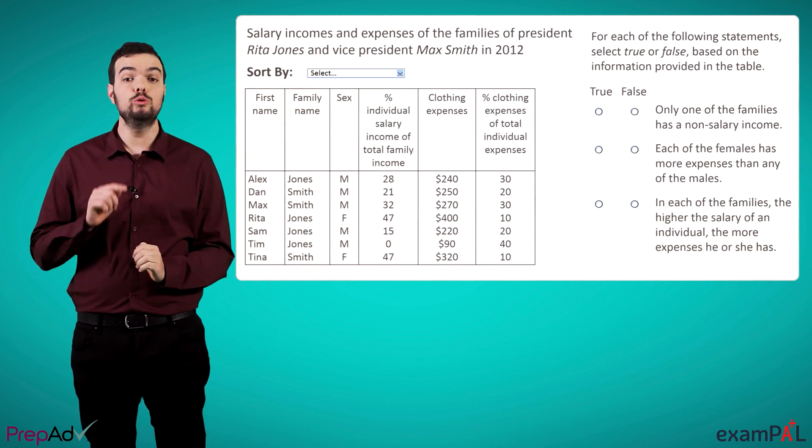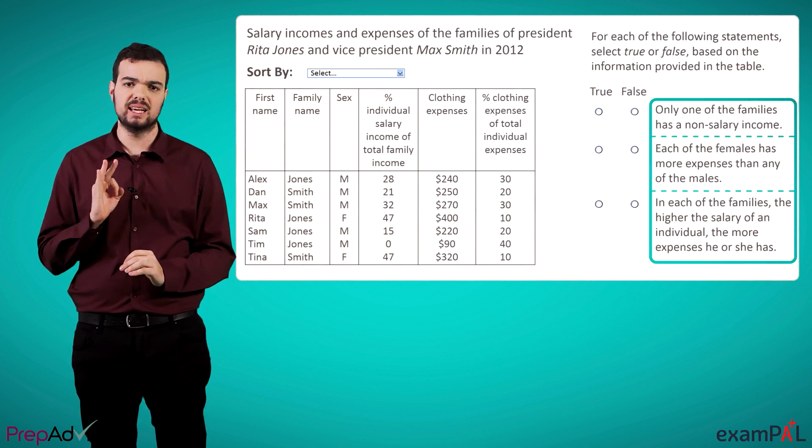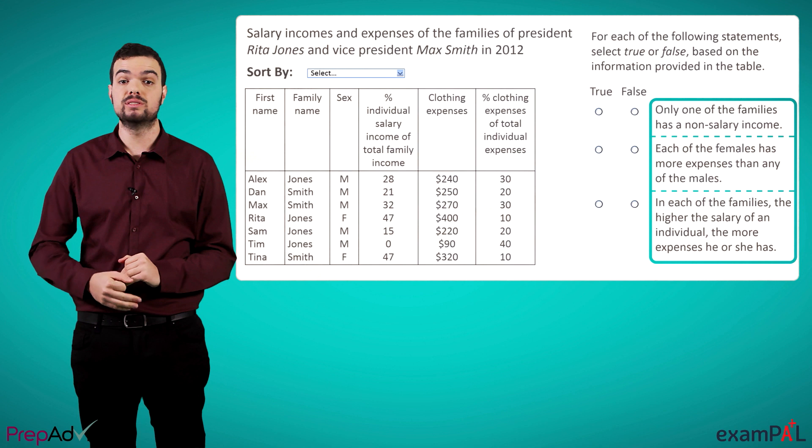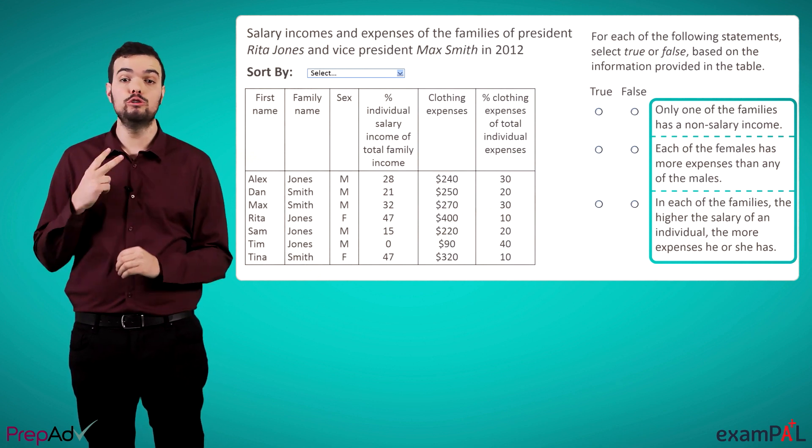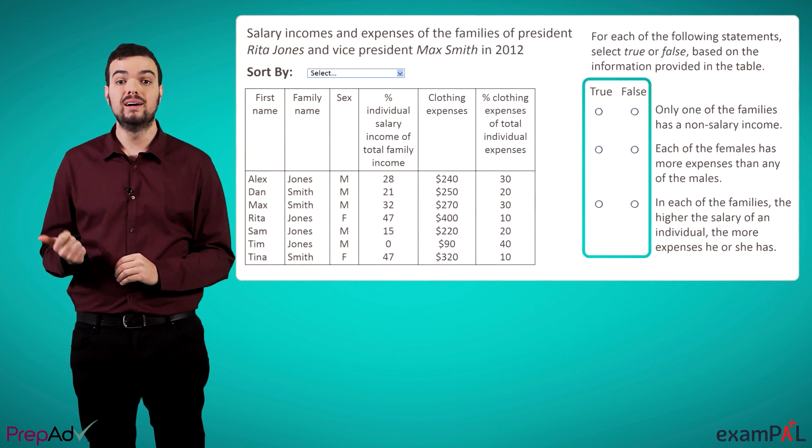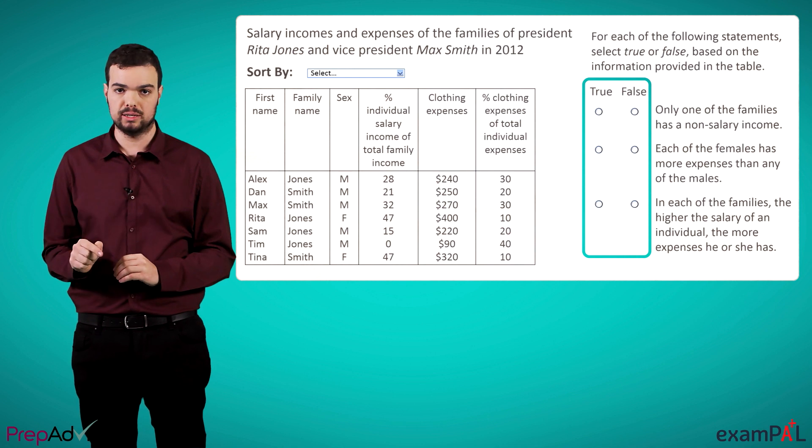Now, to the right of the table, we have a question, which is really made up of three statements, each of which refers in some way to the information in the table. By these statements are two columns, true and false, and for each statement, we have to select the appropriate column.